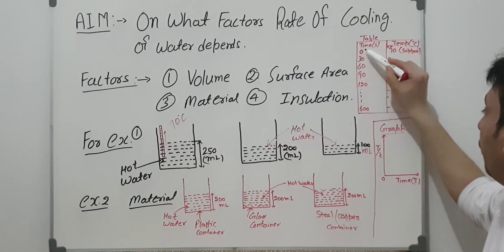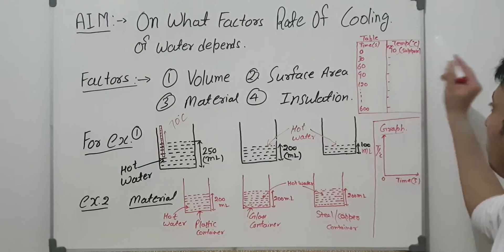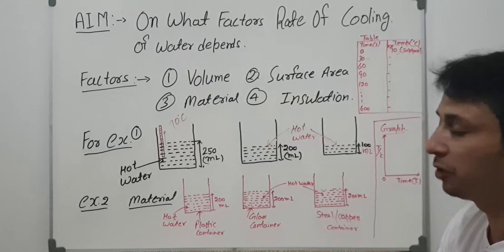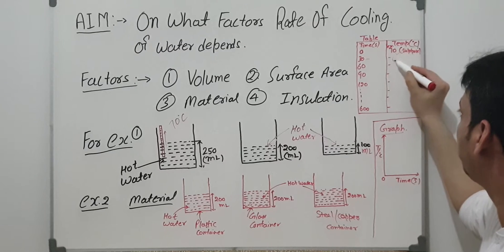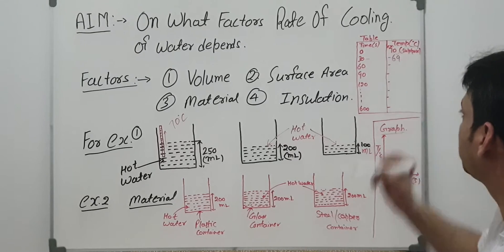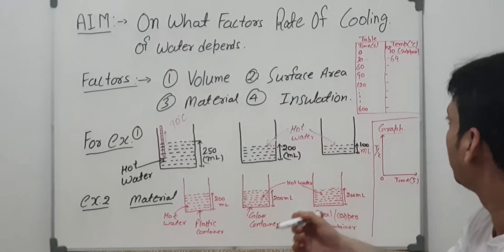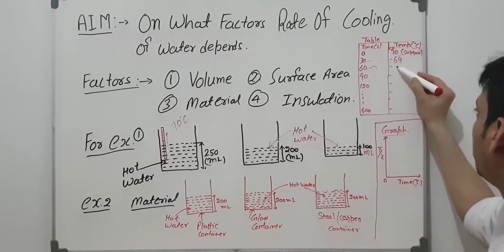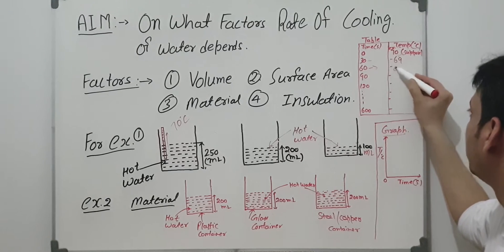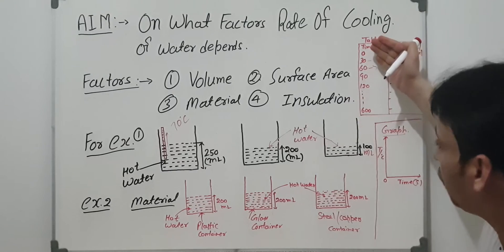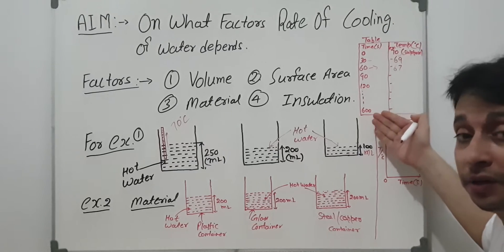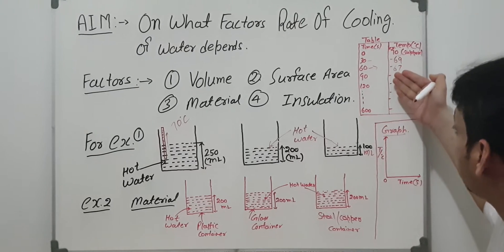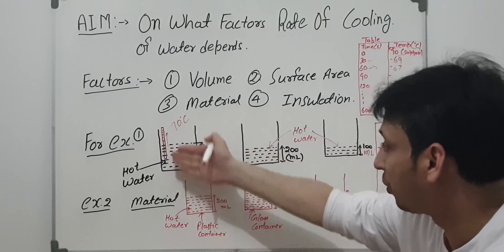When the time is 0 seconds, the initial temperature is 70 degrees Celsius. After 30 seconds, check the thermometer — for example, the temperature falls by 1 degree to 69 degrees. After the next 30 seconds, record the reading again — suppose this value is 67. Continue this way, proceeding with the experiment until 600 seconds, which is 6 minutes, writing down all readings from the thermometer into the table.